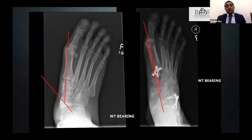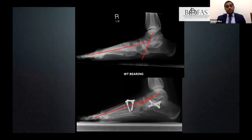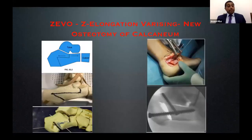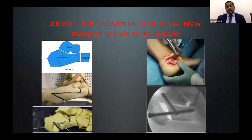Here is an example of how lateral column lengthening corrects the talonavicular joint. If you are adventurous, there is a new technique — the Z-osteotomy, essentially a scarf osteotomy of the calcaneum — which can correct hindfoot valgus and achieve lengthening simultaneously, acting as an all-in-one osteotomy. This may possibly be the future.